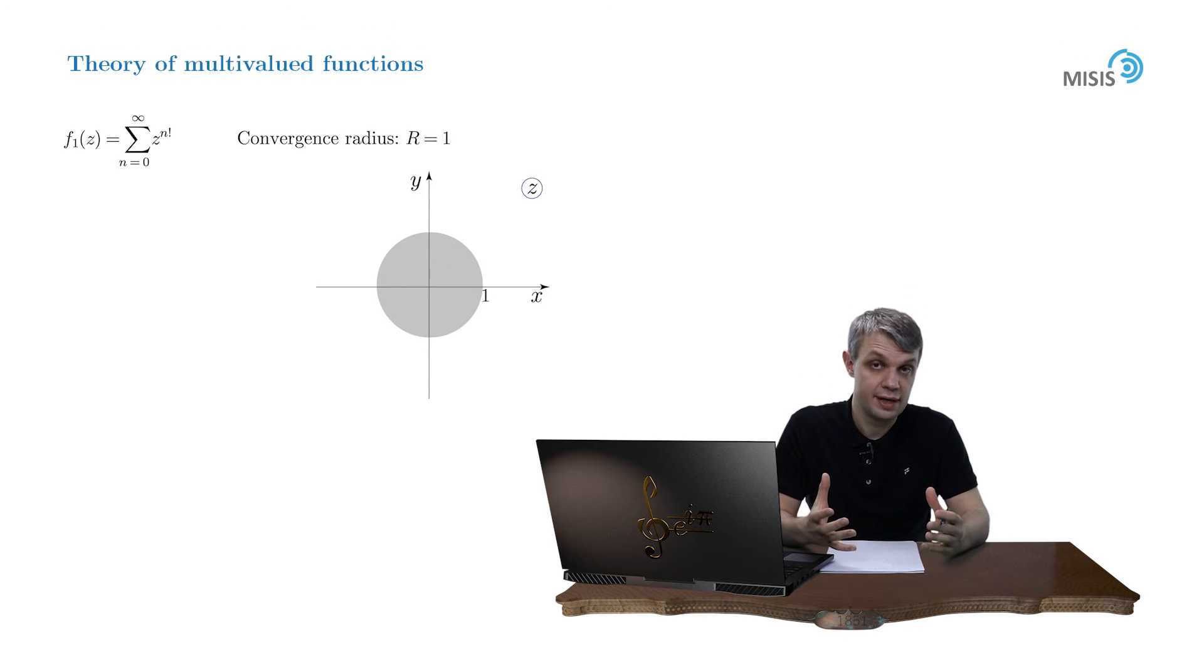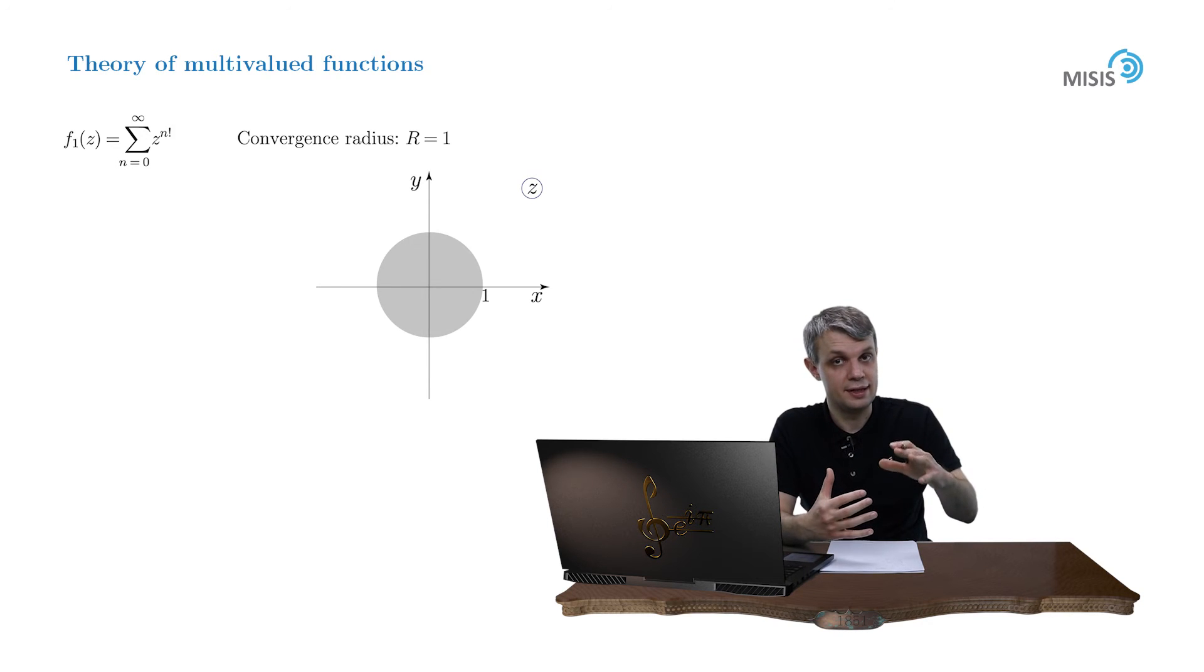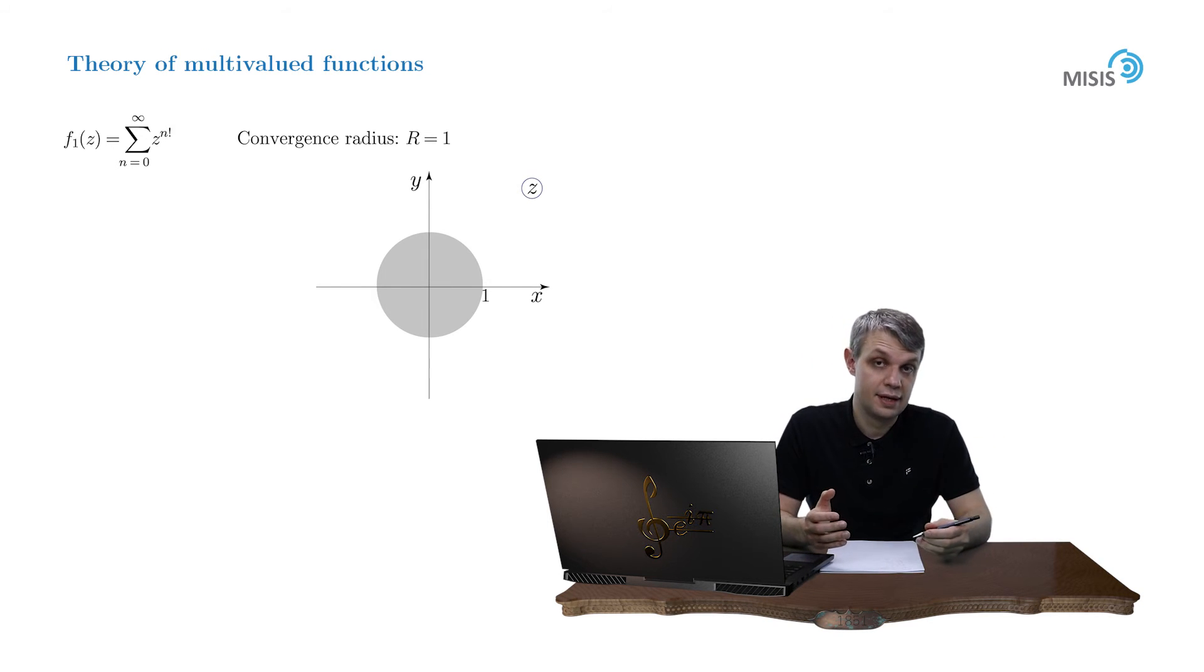This series defines the function analytic inside the unit disk. The uniqueness of this function is that as it happens, it can't be analytically continued anywhere outside this unit disk. And to see this, let's study this function more attentively. As it turns out, this function has a singularity at each root of unity. You can prove it by yourself as a small exercise.